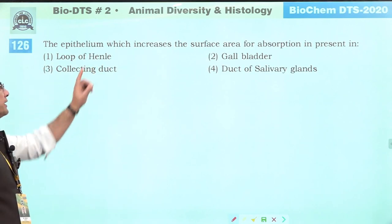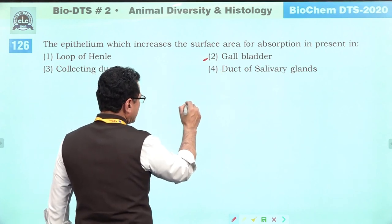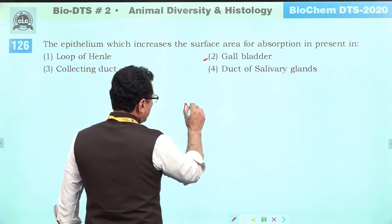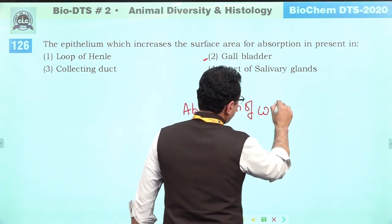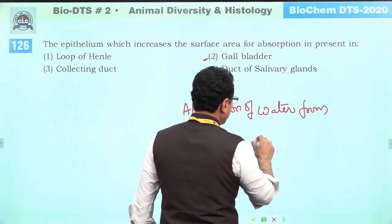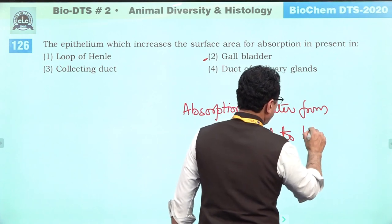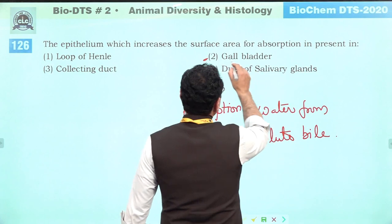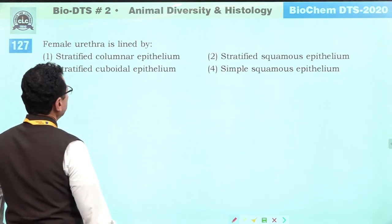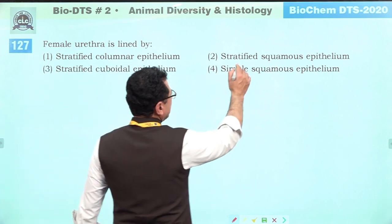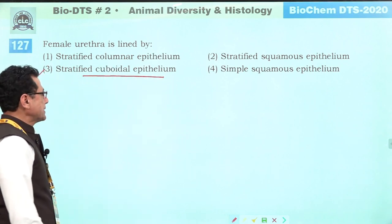The epithelium which increases surface area for absorption is found in the gall bladder. Gall bladder absorbs water from dilute bile. Female urethra is lined by stratified cuboidal epithelium. Answer is three.